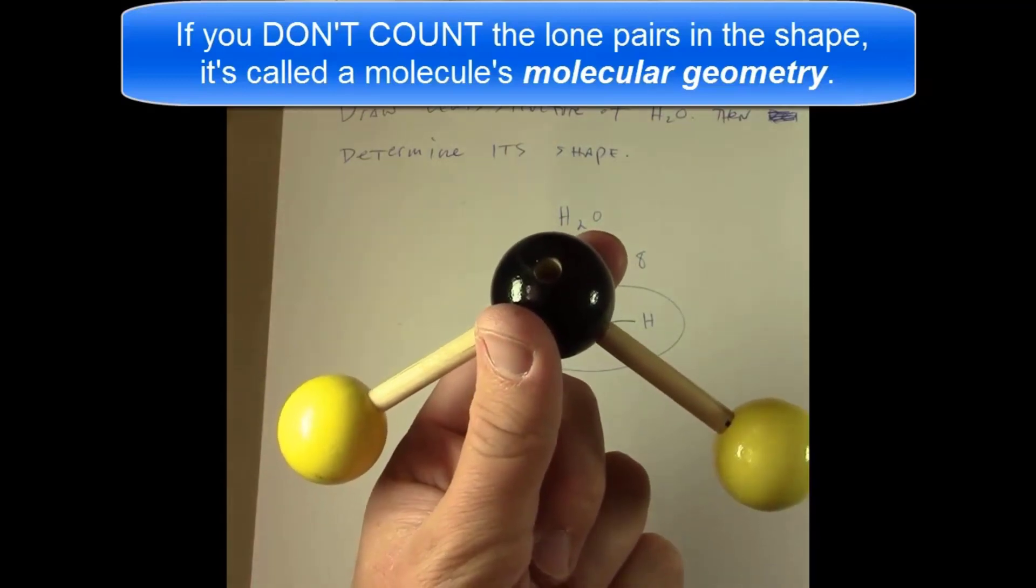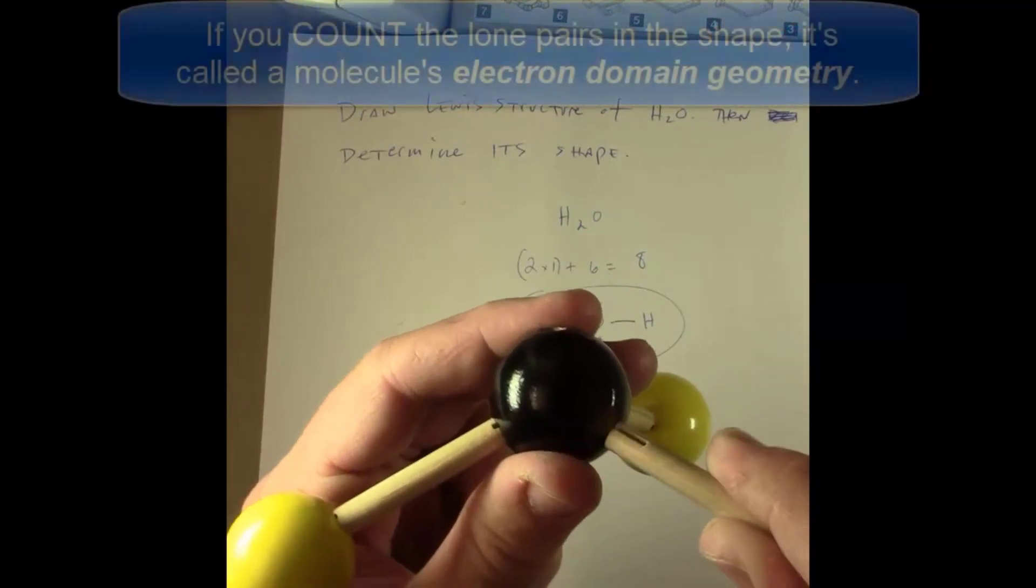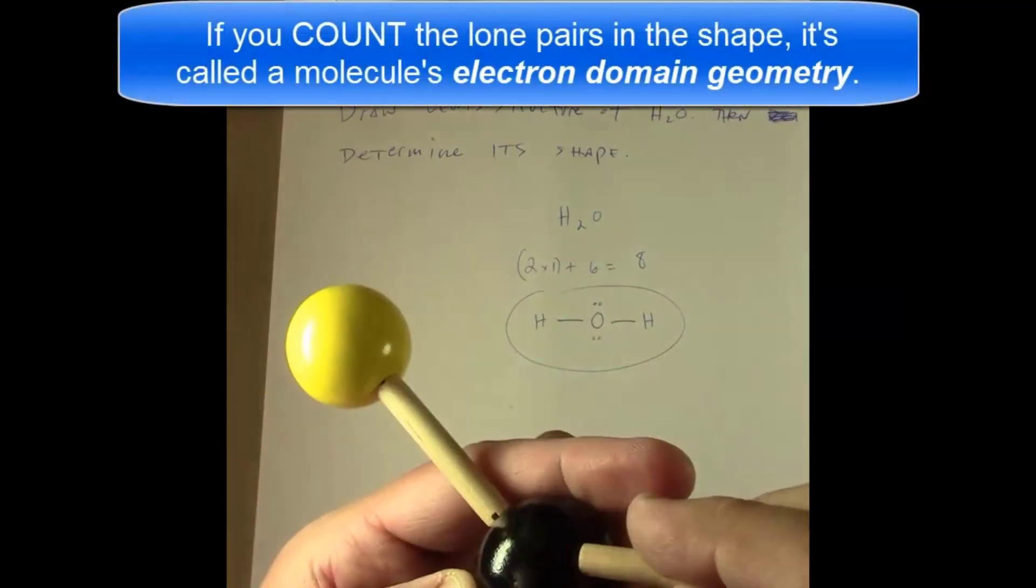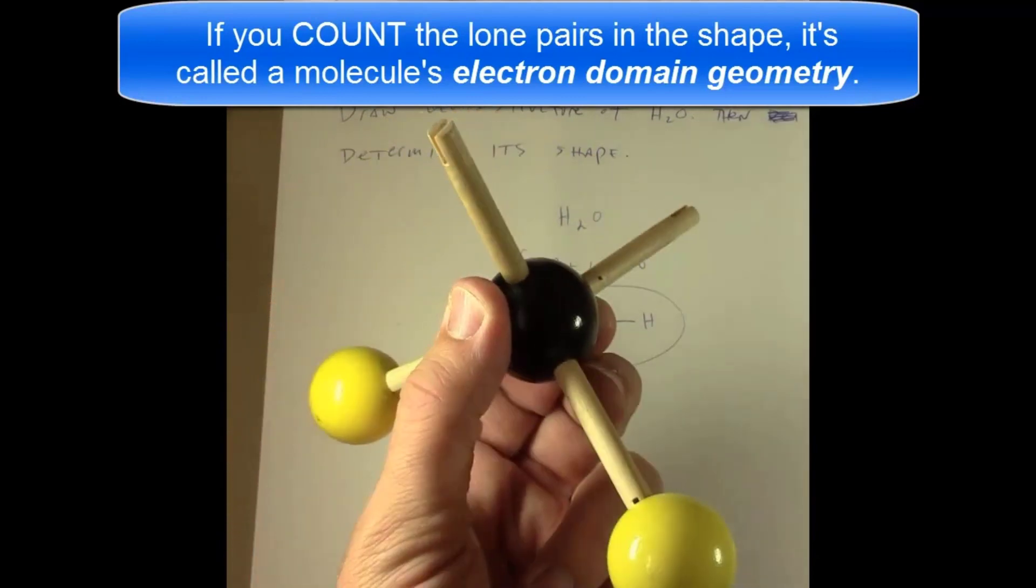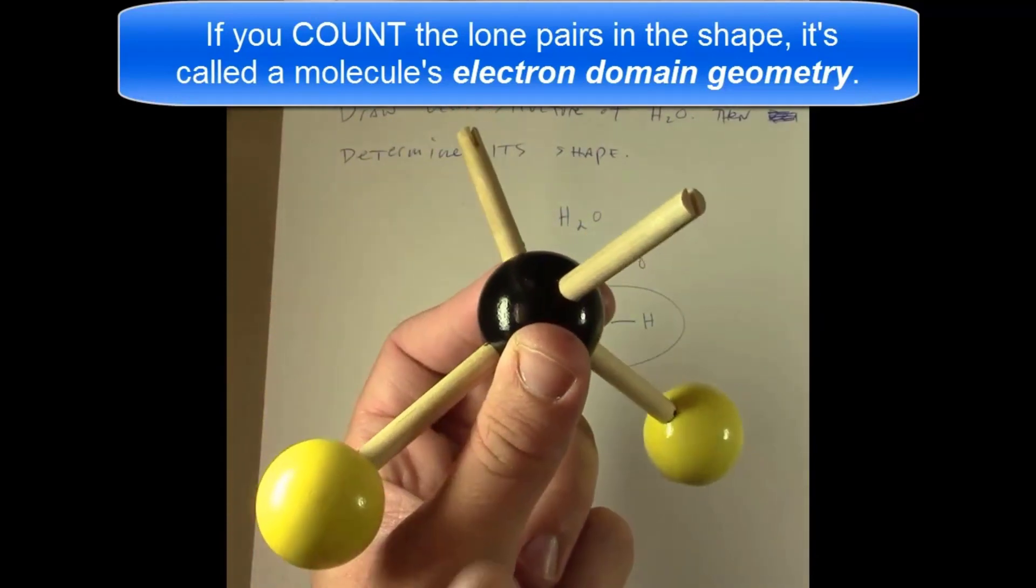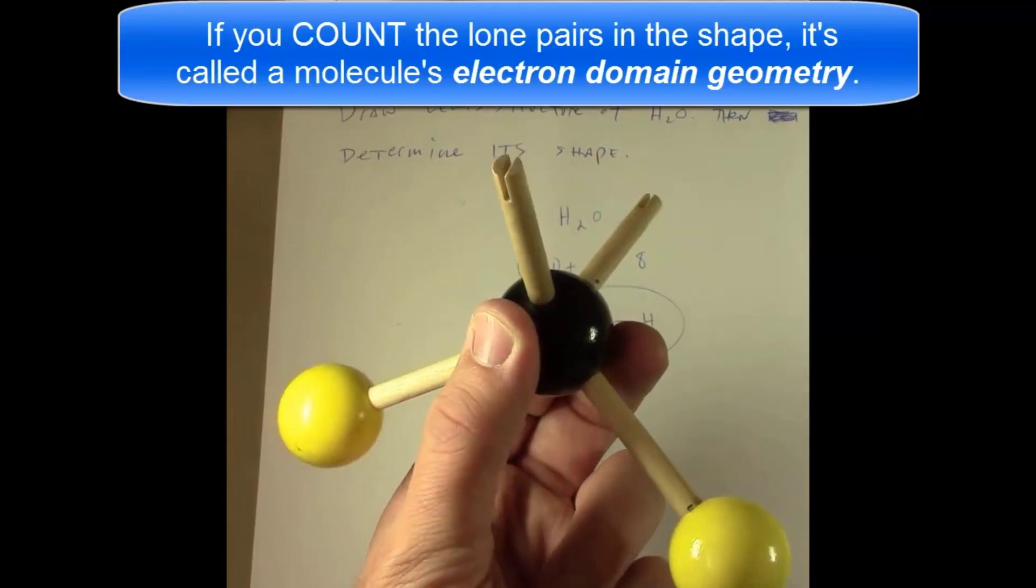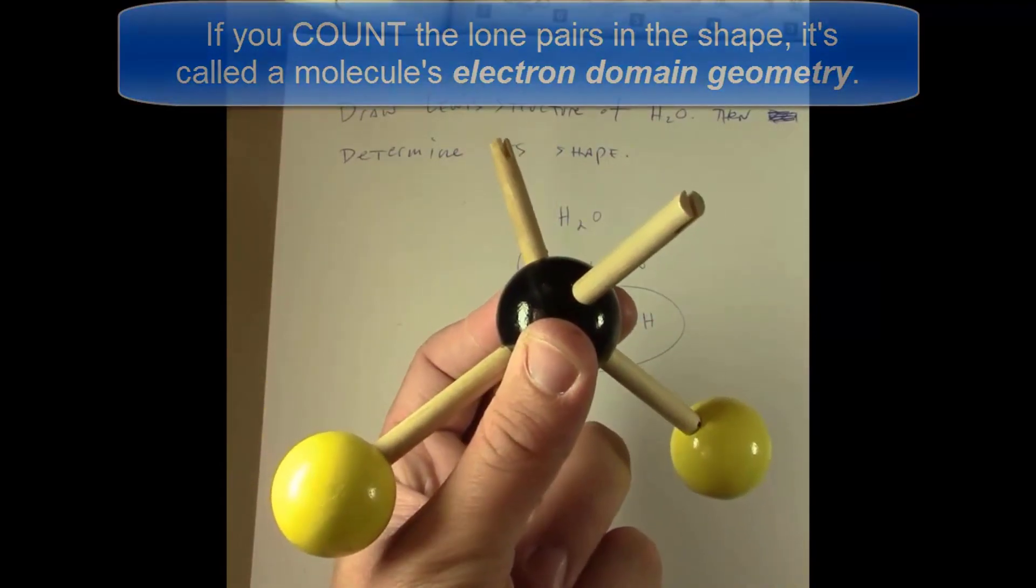The shape of the water molecule and its molecular geometry is bent. If however we count everything, including the lone pairs as contributing to the geometry, then the overall shape is considered tetrahedral. This type of geometry, the one which we count the lone pairs, is called electron domain geometry.